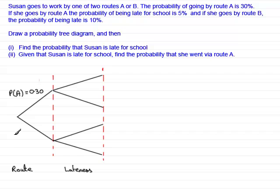Obviously, the remaining route B, the probability she takes route B—we know that this must add up to 100% or one whole one—so that leaves us with 70% or as a decimal 0.70.